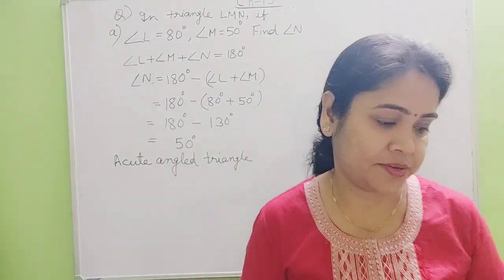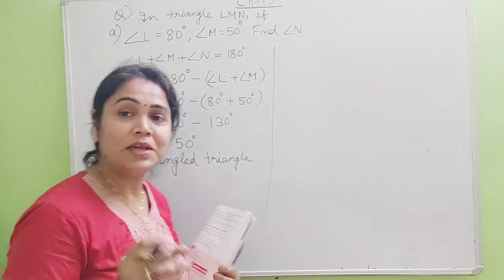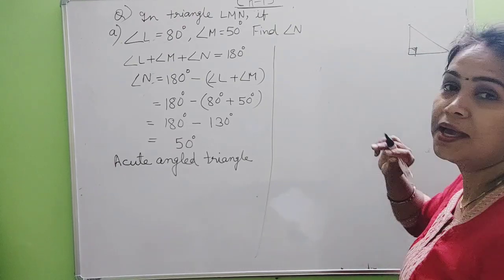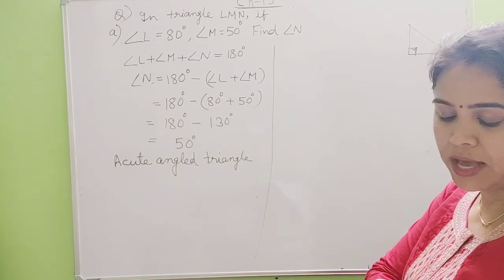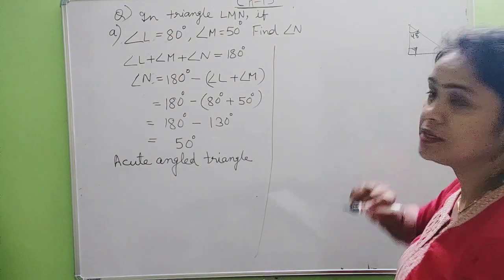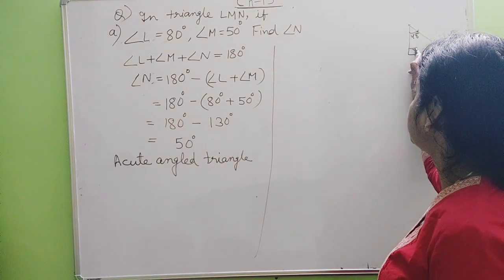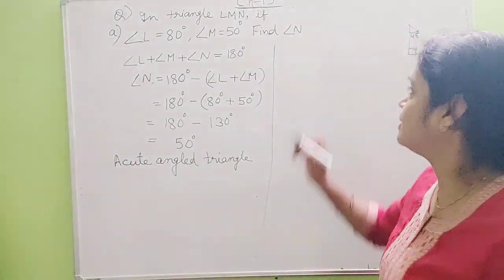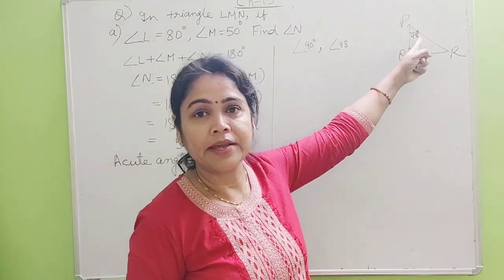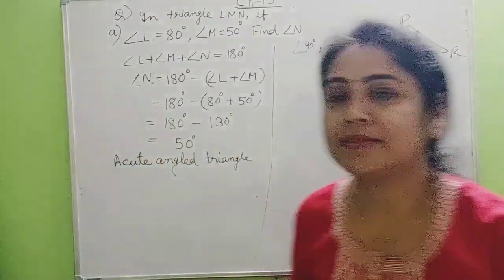Next, I will ask you one question. One of the two acute angles of a right angled triangle is 48 degrees. What is the meaning of right angled triangle? Right angled triangle means one angle is 90 degrees. So here we have got a clue: one angle is 48 degrees, the second angle is 90 degrees, and the third angle you have to find.